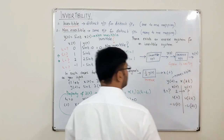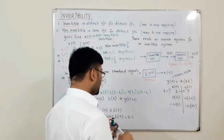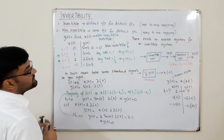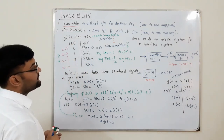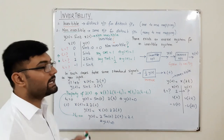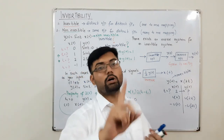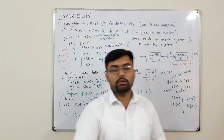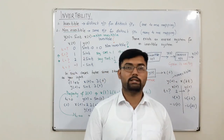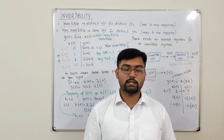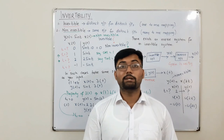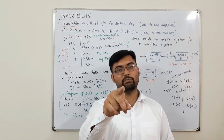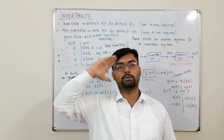This took a while but it was important. When you cannot solve directly, take standard signals — impulse or unit step are easiest. That's all about invertibility of systems. See you in the next lecture with another property. Till then, take care of yourself and everyone around you. Goodbye.